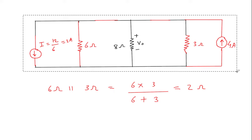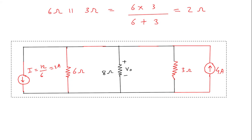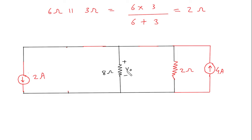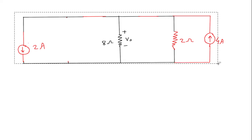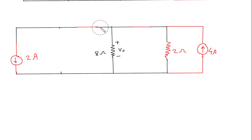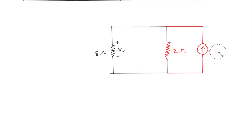So again this will be 2 ohm. Now this is 2 ampere upward and this is 2 ampere downward, so this current source can be replaced. We will erase this — 2 ampere current source. And this will be 4 minus 2 is equal to 2 ampere. The direction of the bigger current is upwards, so this will be 2 ampere.